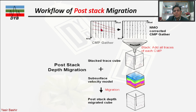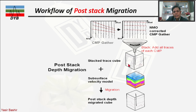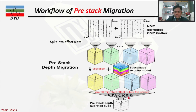The post-stack migration workflow starts with CMP gather input data. You can see the hyperbolic moveout before NMO correction. After NMO correction you perform stacking, which gives you a single trace. Combined with the velocity model from NMO velocity analysis, you then do migration to get the migrated trace. With multiple shot gathers you would have multiple traces.